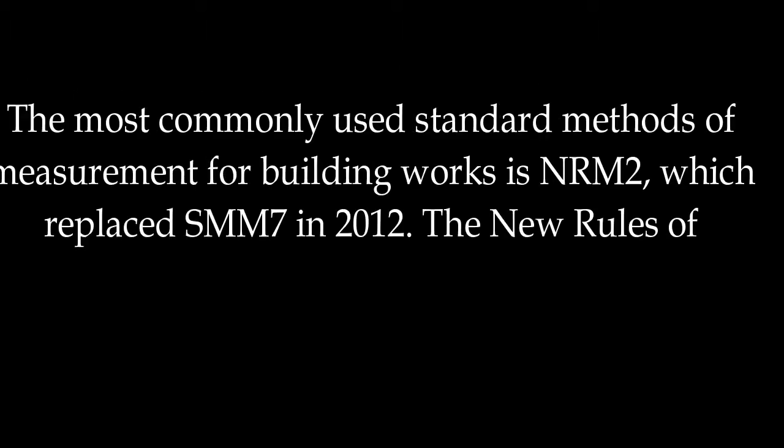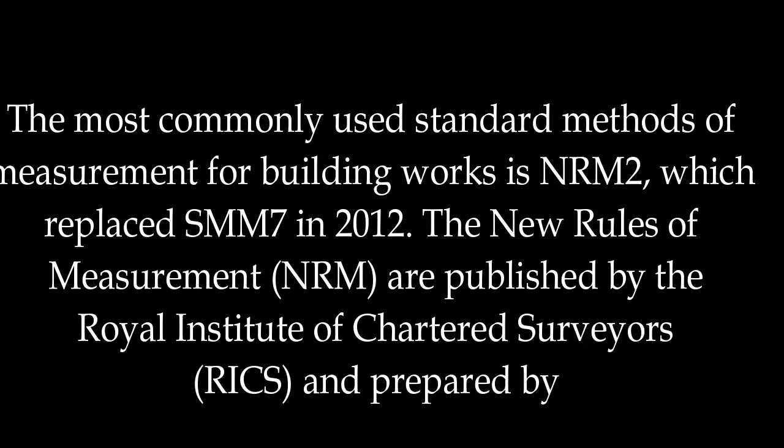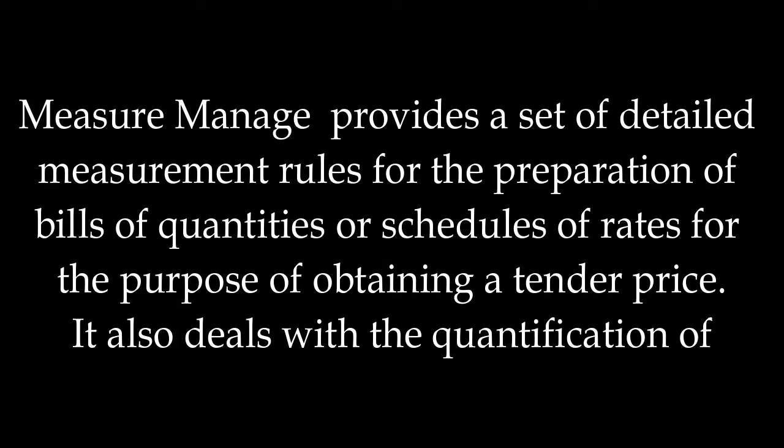The most commonly used standard method of measurement for building works is NRM 2, which replaced SMM 7 in 2012. The New Rules of Measurement, NRM, are published by the Royal Institute of Chartered Surveyors, RICS, and prepared by the Quantity Surveying and Construction Professional Group.